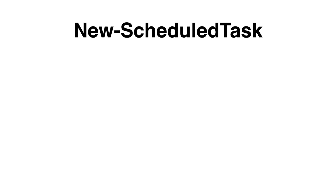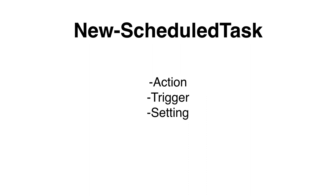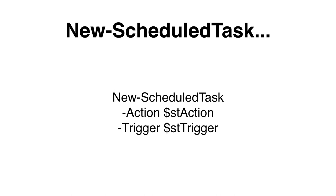Now that we have created an action, a trigger, a principal, and settings, we can create the task with the New-ScheduledTask cmdlet. We specify the Action parameter with our New-ScheduledTaskAction variable, the Trigger parameter with our New-ScheduledTaskTrigger variable, the Settings parameter with our New-ScheduledTaskSettingsSet variable, the Principal parameter with our New-ScheduledTaskPrincipal variable, and we can give our task a description. Here is an example of how to create a new task object with an action and a trigger.